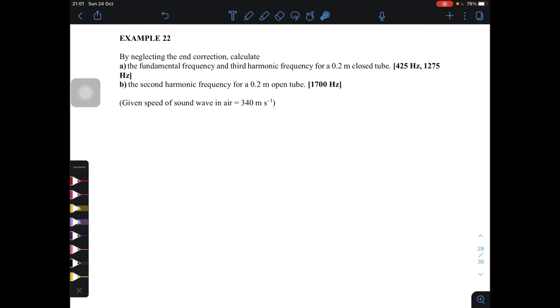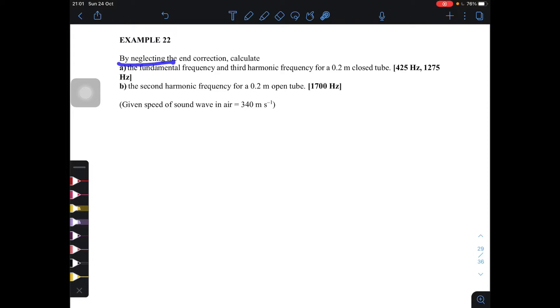Okay, next one, example 22. By neglecting the end correction, calculate the fundamental frequency and third harmonic frequency for a 0.2 meter closed tube. The second harmonic frequency for a 0.2 meter open tube, and given the speed of sound is 340 meter per second.